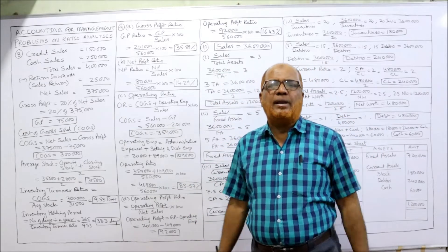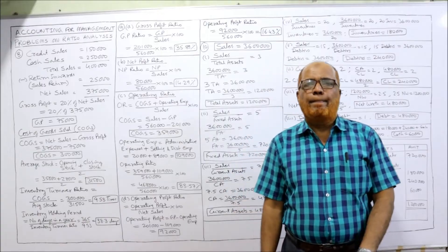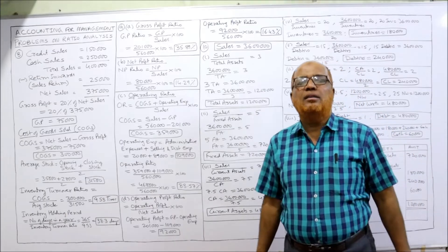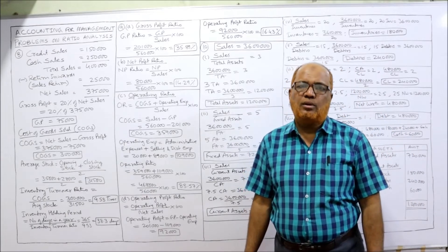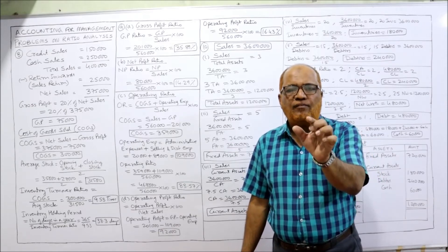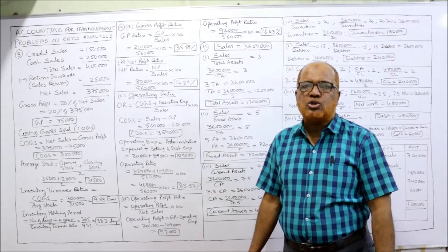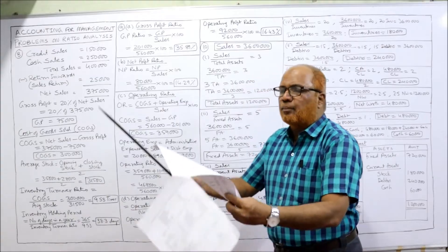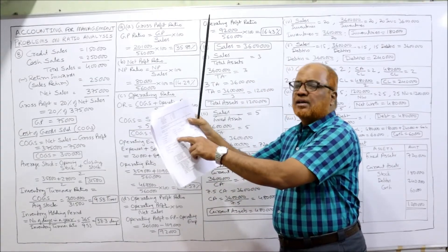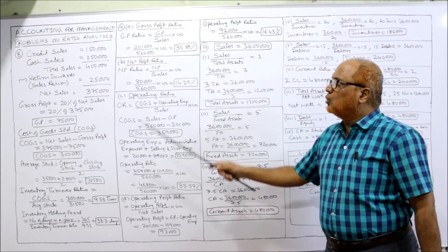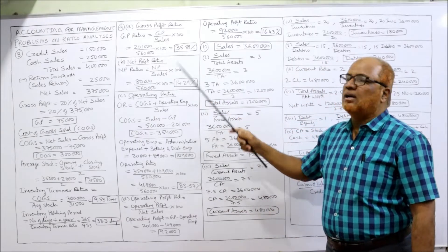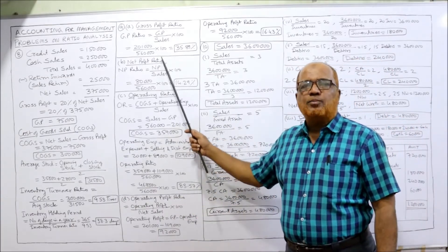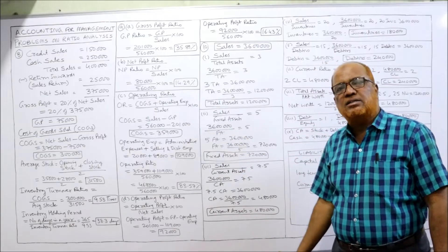The problem is straightforward. Remember the formula for each ratio, apply it, substitute the values and get the answer. First ratio — gross profit ratio: formula is gross profit divided by sales into 100. Gross profit is 2,01,000 and sales are 5,60,000. So 2,01,000 divided by 5,60,000 into 100 equals 35.89%.